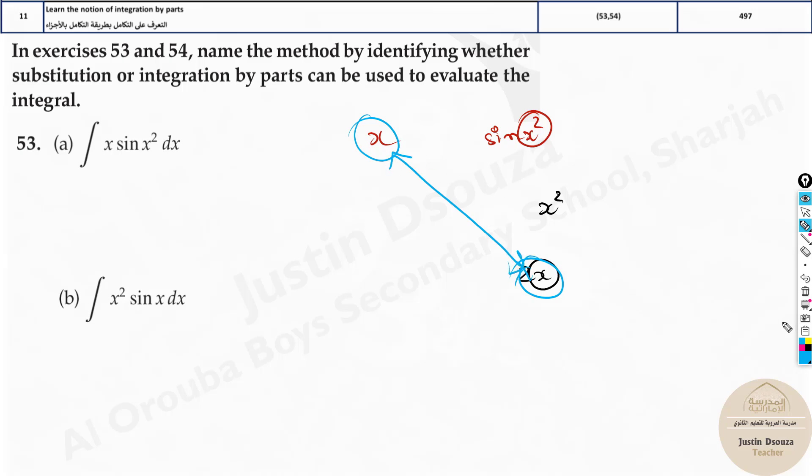If this matches, then you have to do u substitution. Why? Because let me solve this by u substitution. Here you are assuming whatever is there within this as u, x squared as u.